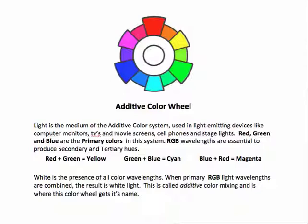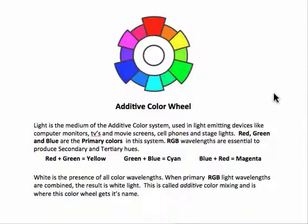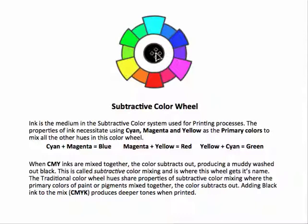The primary wavelengths mixed together produce white light — if we mix all three primary colors in the additive system together, we get white light. In the traditional system, if we mix red, yellow, and blue paint together, the color subtracts out and neutralizes, resulting in a muddy gray. Mix any two primaries and you get another color, but mix all three together and they neutralize to black or muddy gray.